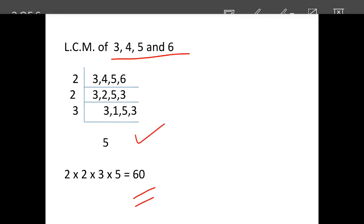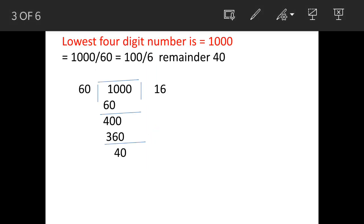The LCM of the numbers given 3, 4, 5, and 6 is 60. You can see the details. Now let's assume that particular four-digit number is 1000, and since we are looking for the lowest 4-digit number, 1000 is in any case the lowest 4-digit number.